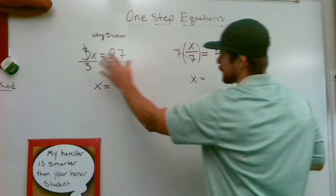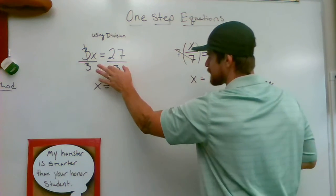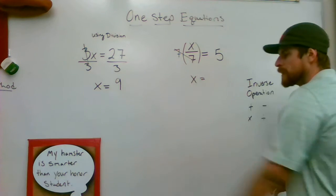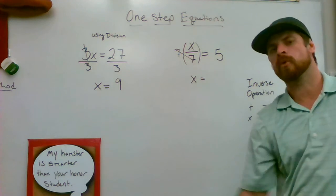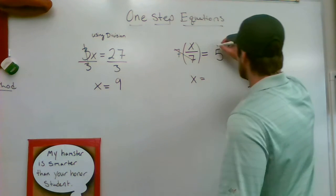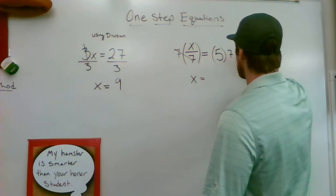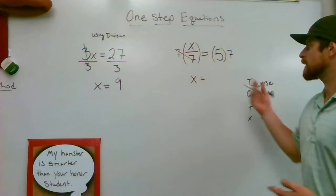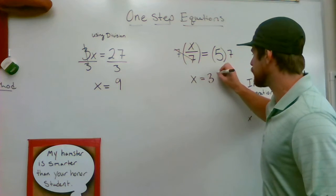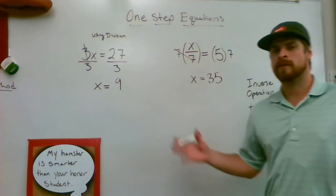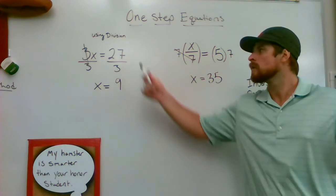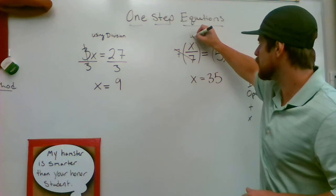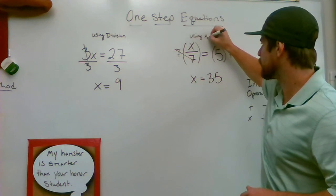Now, again, just like over here, if we divide by 3 on the left, we have to divide by 3 on the right. In this problem, if we're going to multiply by 7 on the left, we are going to multiply by 7 on the right. 5 times 7. We know our multiplication. 5 times 7 is going to give me a grand total of 35. And just like that, we have solved two one-step equations. One using division, the other using multiplication.